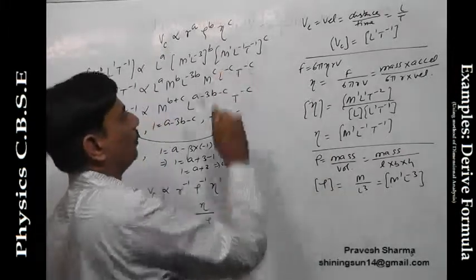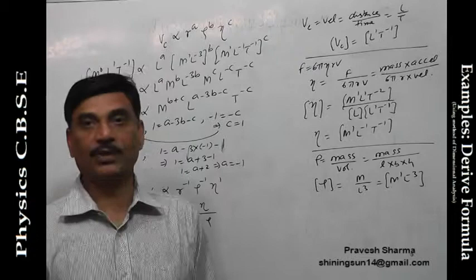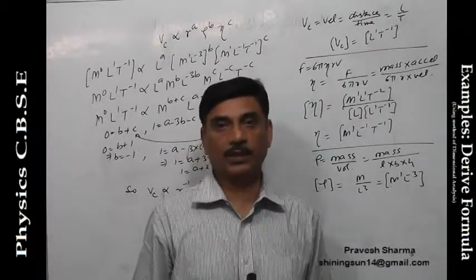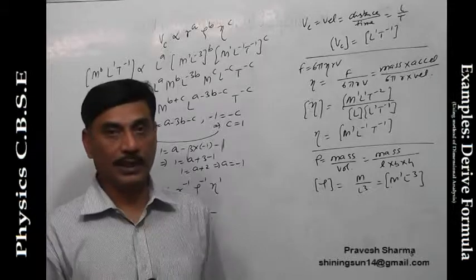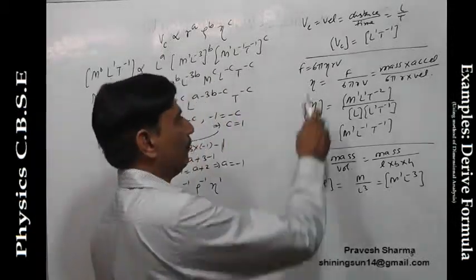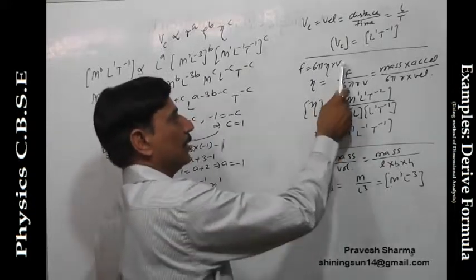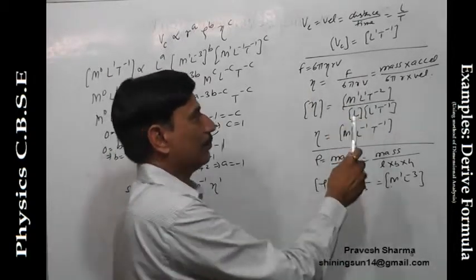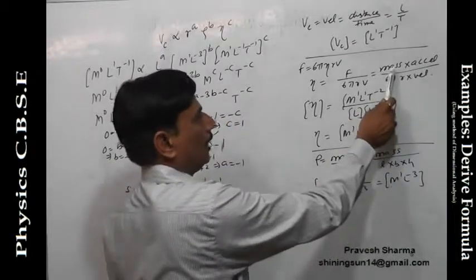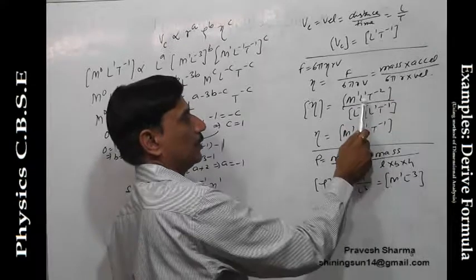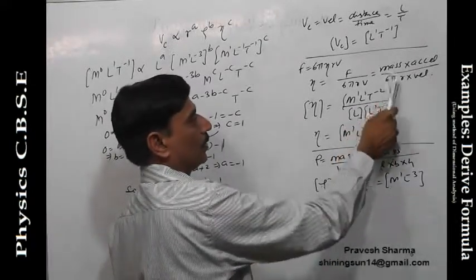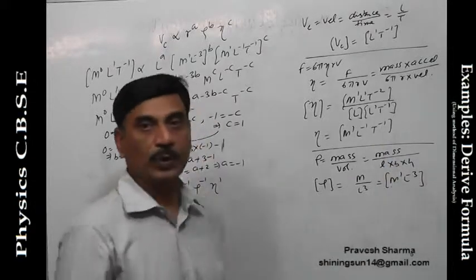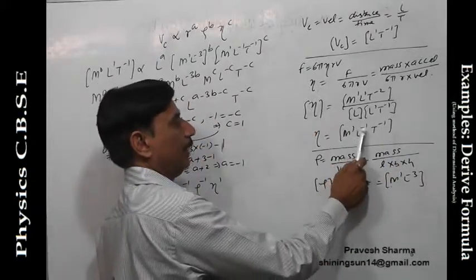Coming to coefficient of viscosity eta, we know we have Stokes law: f is equal to 6 pi eta r v, where a body of radius r is moving through a fluid of coefficient of viscosity eta, then it experiences drag force which is given by f equals 6 pi eta r v. Eta is equal to f upon 6 pi r v. f is force, mass into acceleration, upon 6 pi r v. Mass m, acceleration's dimensional formula is L1 T minus 2, 6 pi is constant, it goes off, r is L only, velocity L1 T minus 1. We get the dimensional formula for coefficient of viscosity as M1 L minus 1 T minus 1.